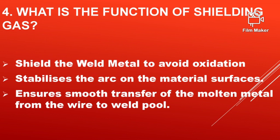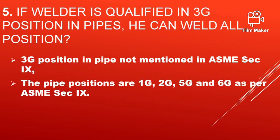What is the function of shielding gas? That is to protect the weld metal from atmospheric air to avoid oxidation, then to stabilize the arc on the material surface, and then to ensure smooth transfer of the molten metal from the wire to the weld pool.